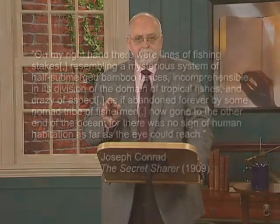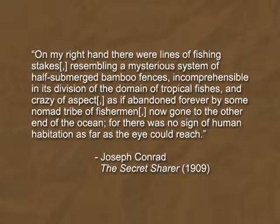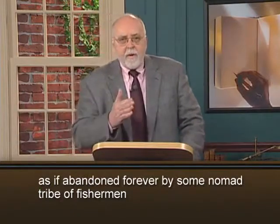Listen to the striking opening sentence of Joseph Conrad's The Secret Sharer: "On my right hand, there were lines of fishing stakes resembling a mysterious system of half-submerged bamboo fences, incomprehensible in its division of the domain of tropical fishes, and crazy of aspect, as if abandoned forever by some nomad tribe of fishermen now gone to the other end of the ocean, for there was no sign of human habitation as far as the eye could reach." It is only when we get to the simile "as if abandoned forever by some nomad tribe of fishermen" that we fully understand the extent to which Conrad's narrator has a very active imagination and loves to use it to make stories out of what he sees.